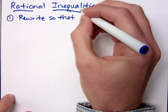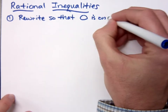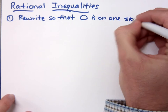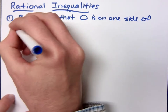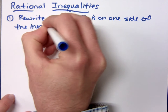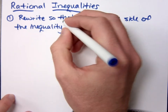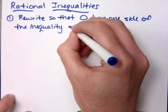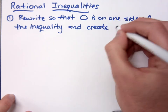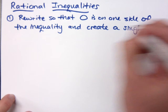With rational inequalities, you want to rewrite so that zero is on one side of the inequality and create a single fraction on the other side.